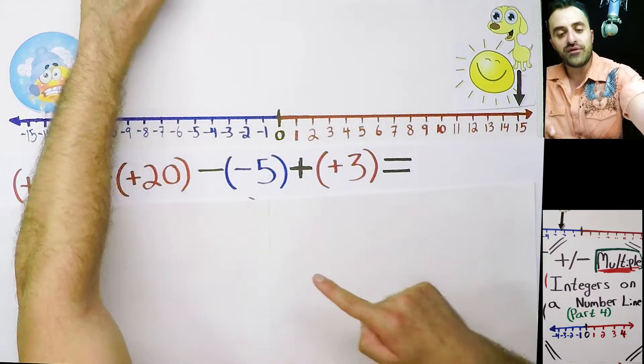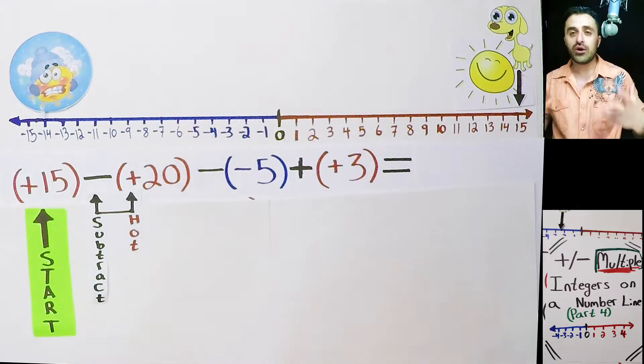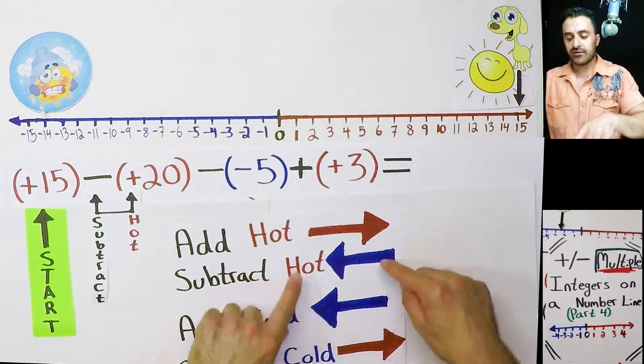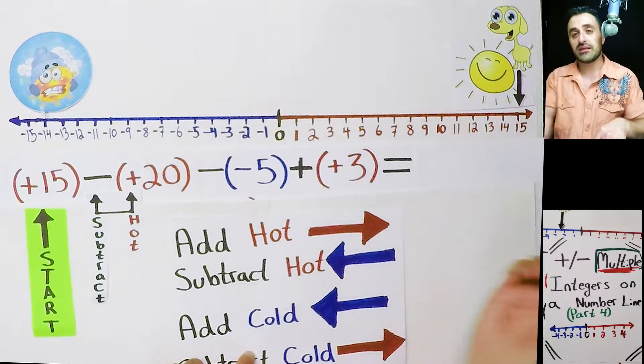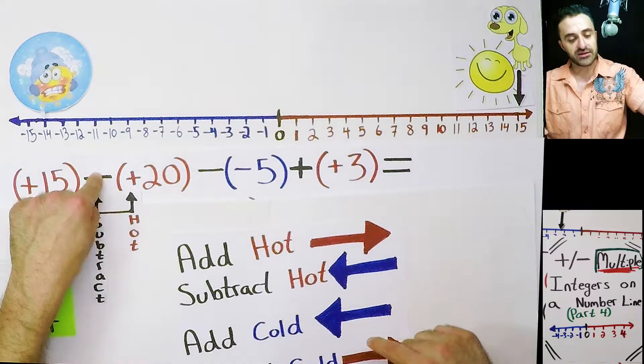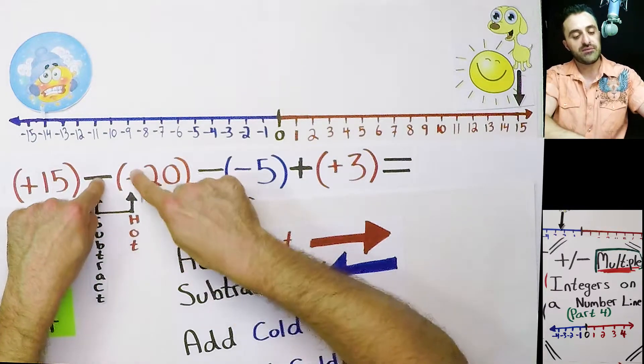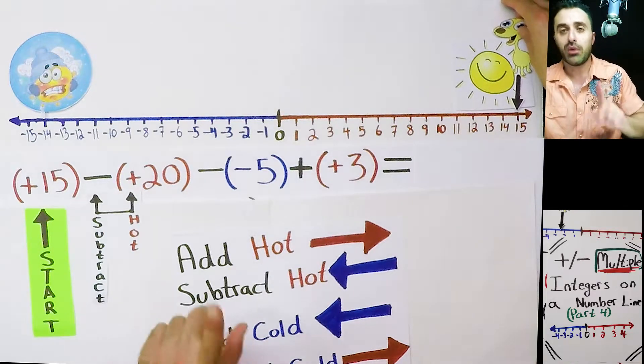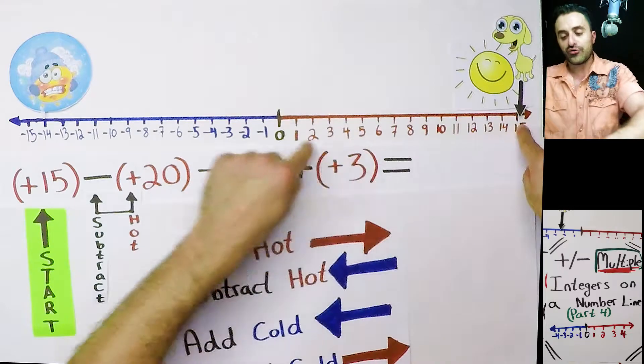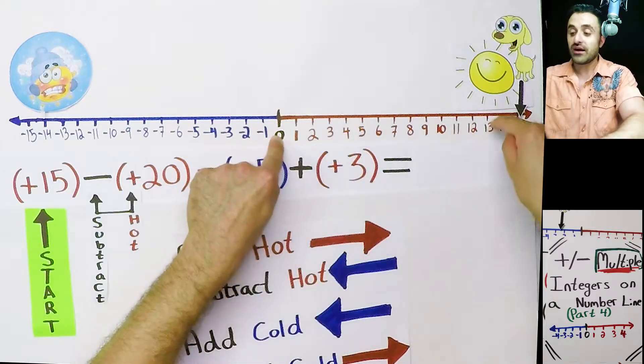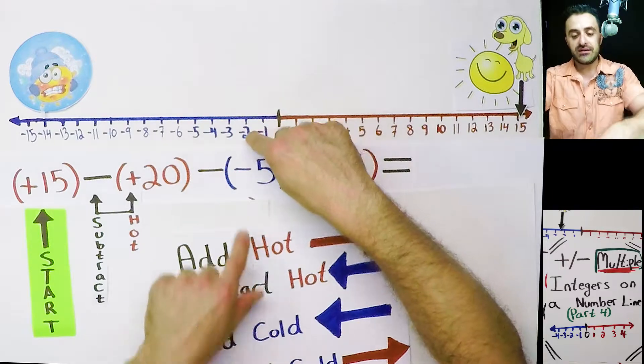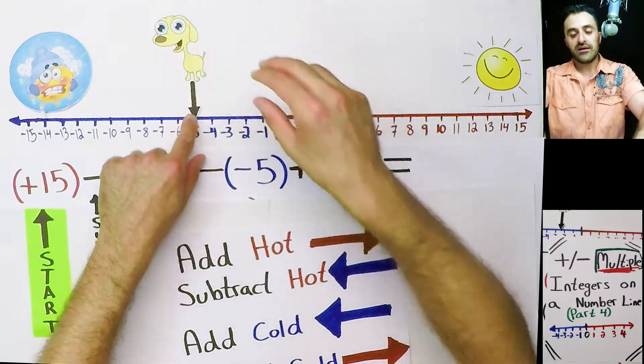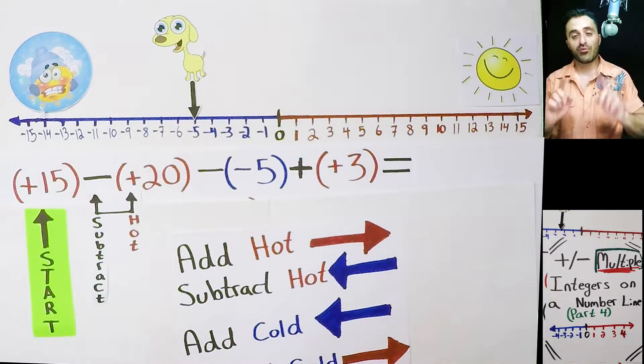What do we know about subtracting hot? When you subtract hot you get colder, you start moving towards the left side. Puppy says okay I've got to go now to the left because these two tell me go left 20 spots. Puppy's going to go 20 spots left. From 15 to zero is 15 spots, then we go 16, 17, 18, 19, and 20. So far that's where he lands but we're not done yet.